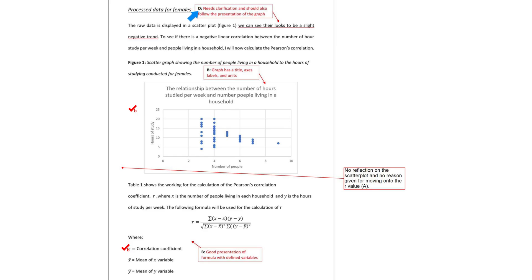Criterion D — interpretation — needs clarification and should also follow the presentation of the graph. As we can see there looks to be a slight negative trend. The graph has a title, axis labels and units, which is good — that's under mathematical communication. The examiner also liked the graph. The examiner wrote: no reflection on the scatterplot and no reason given for moving on to the R value. Once you do one process, you need to justify your next process by interpreting or reflecting on it before moving forward.